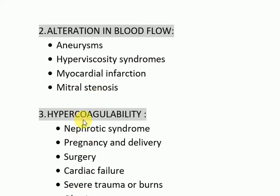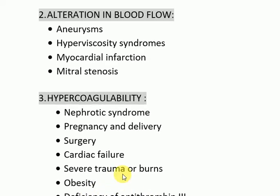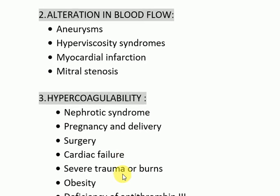Hypercoagulability examples include nephrotic syndrome, pregnancy and delivery, surgery, cardiac failure, severe trauma or burns, obesity, deficiency of antithrombin 3, and disseminated cancers. These are the examples which are important for your MCQs and SEQs.